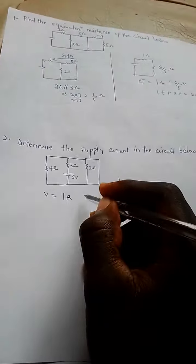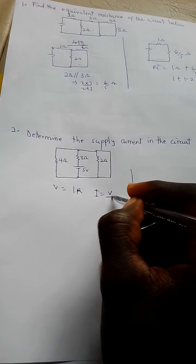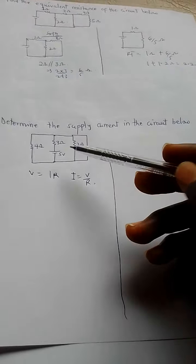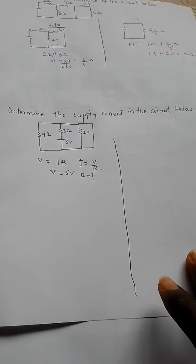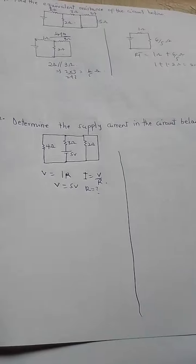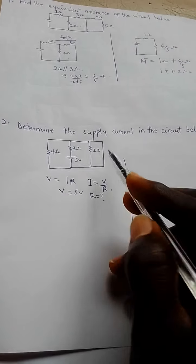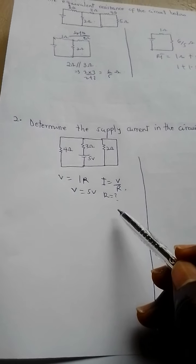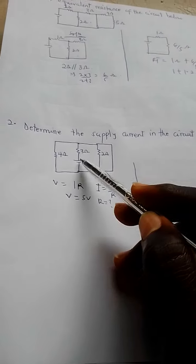So our current will be equal to our voltage over resistance. From the circuit we know that the voltage given is 5 volts, so V equals 5 volts. But we don't know R, so we are left to find our R. To find the R, you have to find the effective resistance of the circuit, that's our RT.